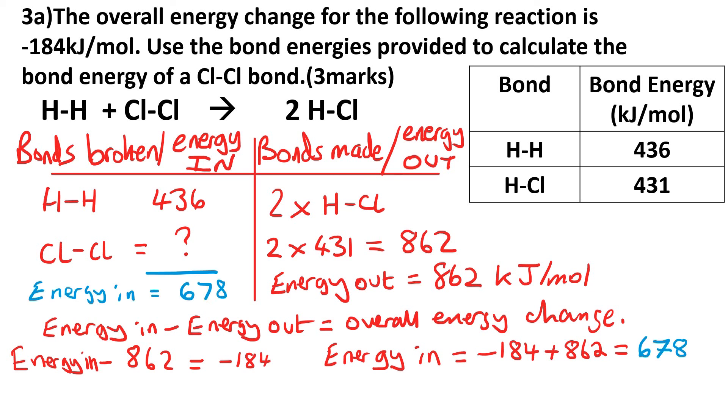That comes to 678 kilojoules per mole for the energy in. We can now see that the missing number for Cl-Cl is going to be 678 minus 436, which is 242 kilojoules per mole.